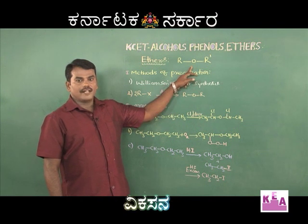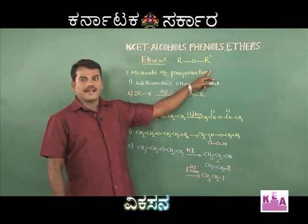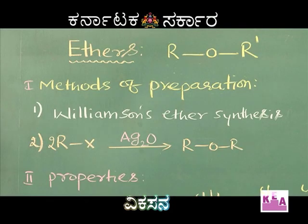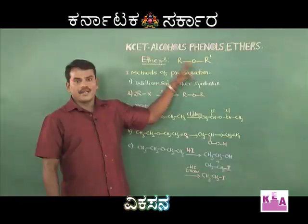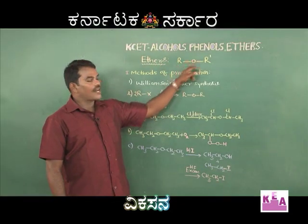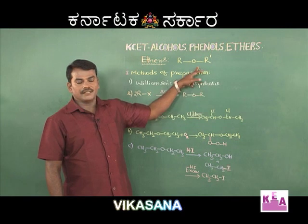Ethers have the general formula R–O–R'. If both the alkyl groups are the same, it is called a symmetric ether or simple ether. If both the alkyl groups are different, it is called a mixed ether.